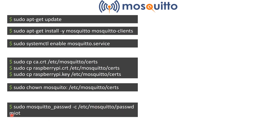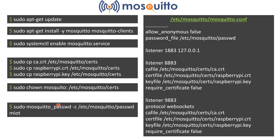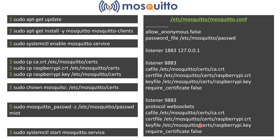Create a password with username 'miot' using the mosquitto_passwd command — it will prompt for a password. Then open /etc/mosquitto/mosquitto.conf and add the configuration lines: listen on port 1883 for localhost (insecure), port 8883 using SSL certificates, and optionally port 9883 for WebSockets with those same certificates. Save the file and restart the Mosquitto service.